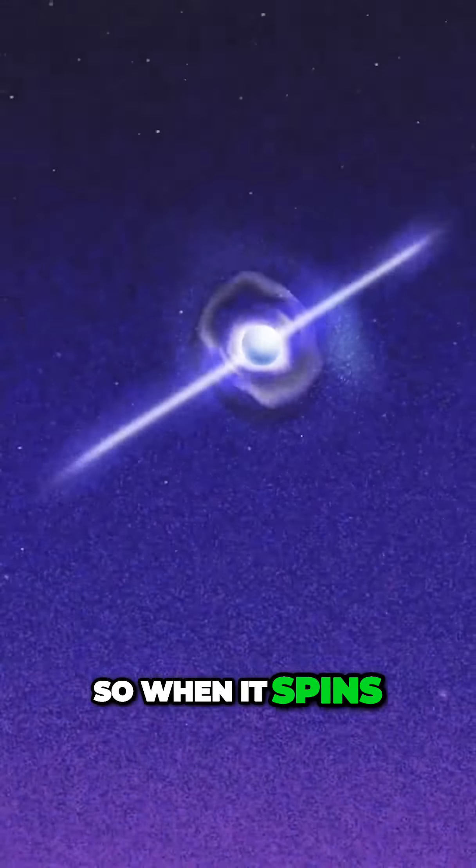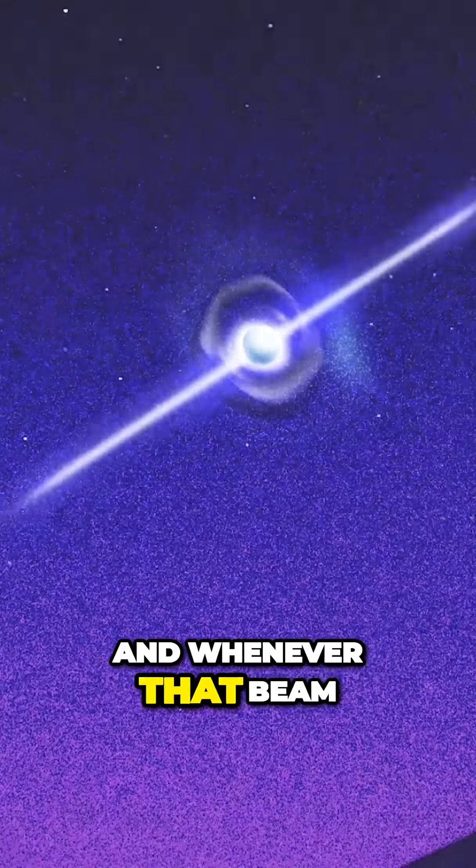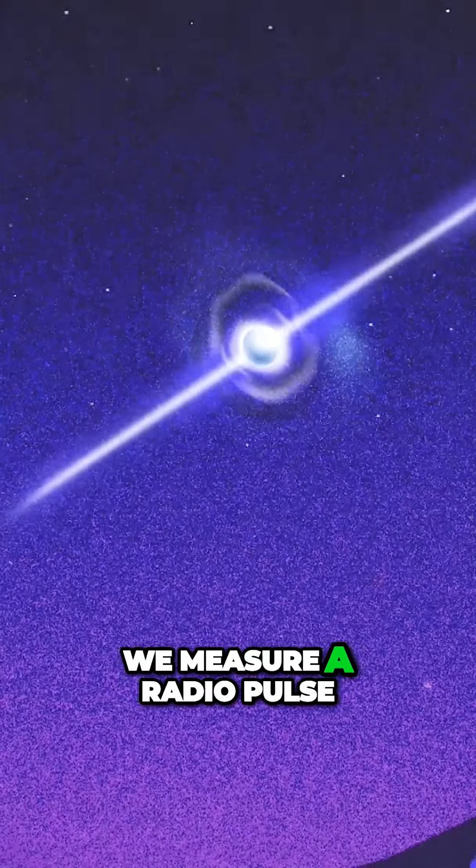So when it spins, that beam might actually get swung into our line of sight, kind of like a lighthouse. And whenever that beam swings past, we measure a radio pulse.